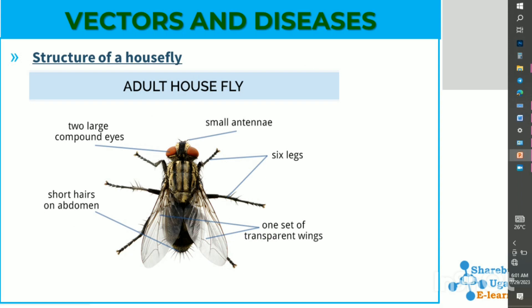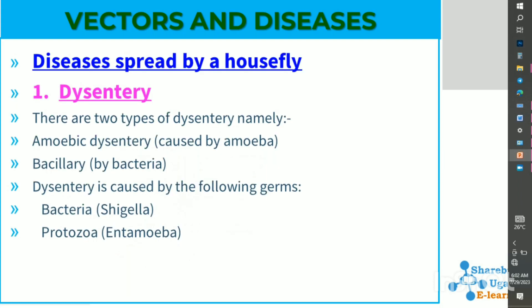The structure of a housefly: a housefly has one set of transparent wings, short hairs on the abdomen, small antennae, six legs, and two large compound eyes. Diseases spread by a housefly include dysentery.